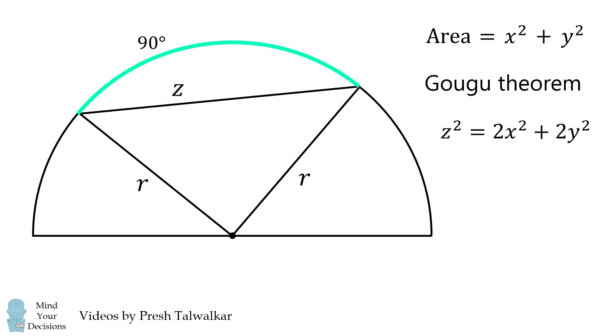Since this circular arc is 90 degrees, this central angle will be equal to 90 degrees as well. It'll be a right angle. We can thus apply the Gogu theorem again, to get z squared is equal to r squared plus r squared.